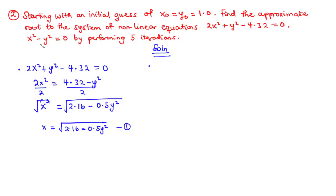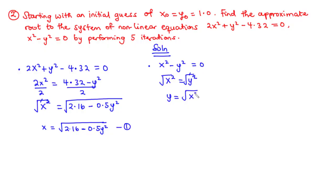Moving on to the second root-finding problem: x squared minus y squared equals 0. We want to make y the subject. Transposing gives x squared equals y squared. Taking the square root of both sides, y equals the square root of x squared. In all cases we are interested in finding the positive square roots of whatever values we have.